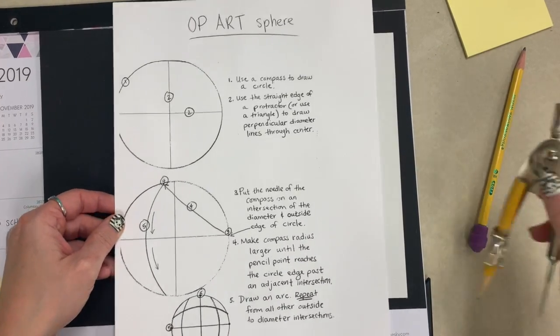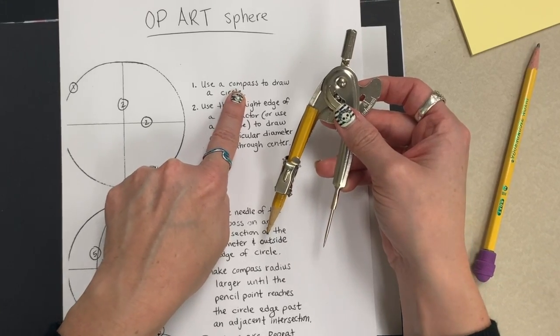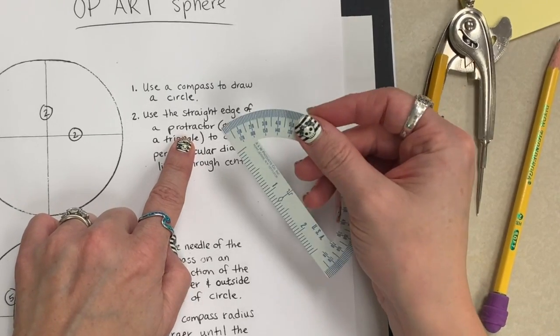First, you need a compass as a tool to draw a perfect circle with arcs. Then, you'll need a protractor, which is a semicircular ruler with angle measurements on it.